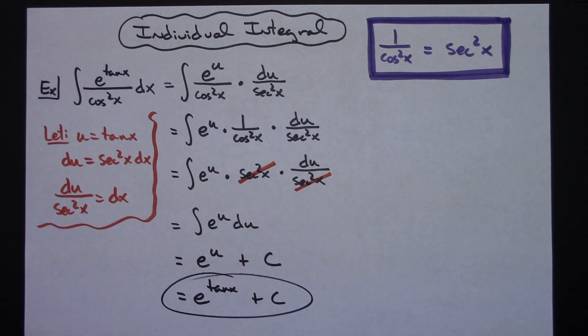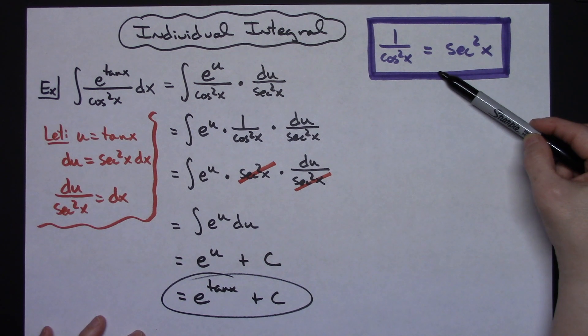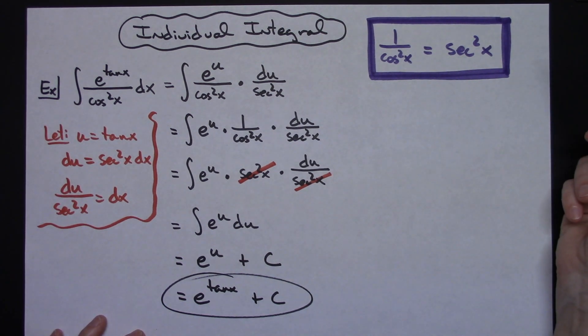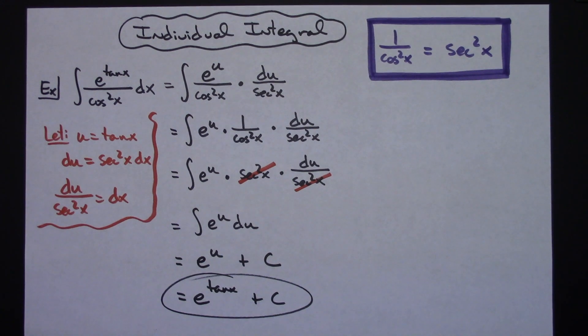So it is just a basic u substitution, but getting everything to cross out you've got to know your trig identities well enough to know where and how you can substitute to make things fall out. Definitely thanks for watching. If the videos are helping please share with your friends so they can benefit as well. Thanks.